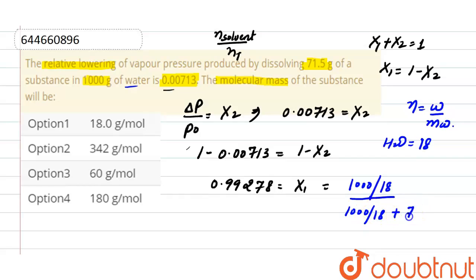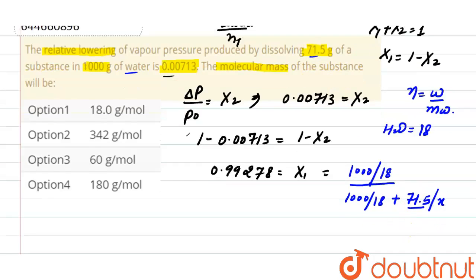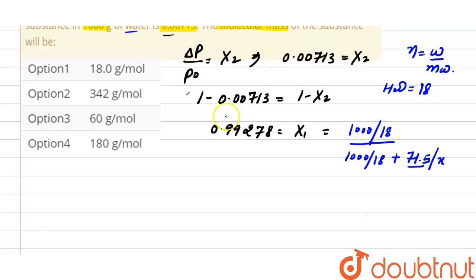And molecular mass of solute we have to find out. Now we will inverse both sides, that is 1 divided by 0.99278 equals to 1 plus 71.5 divided by x into 1000 divided by 18.